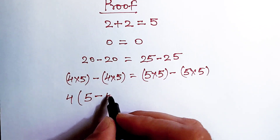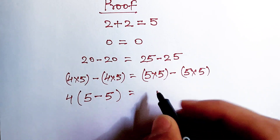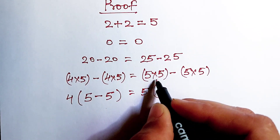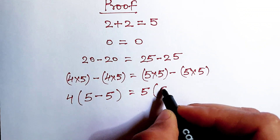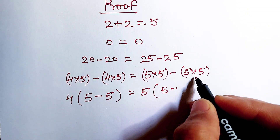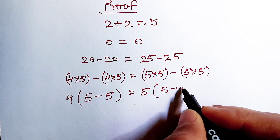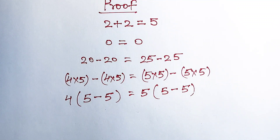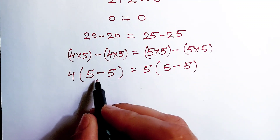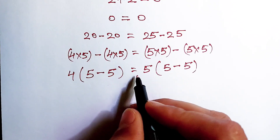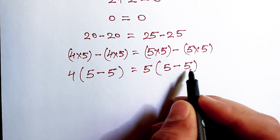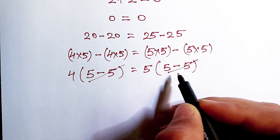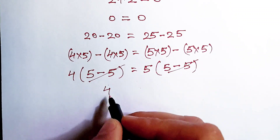We take out 4 as common, giving 4 times (5 minus 5). Then we take out 5 as a common term, giving 5 times (5 minus 5). Here, 4 multiply (5 minus 5) equals 5 multiply (5 minus 5). This will cancel out, leaving 4 equals 5.